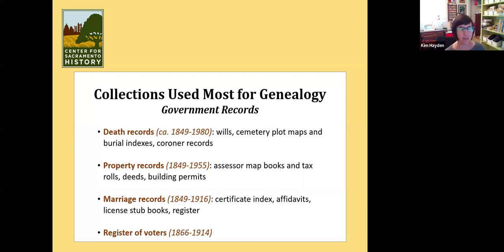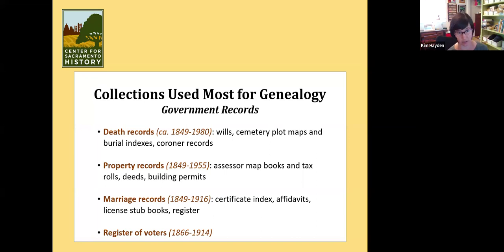The assessor rolls coincide with the map books in that they list people alphabetically and what their personal or real property taxes were and where they owned property. So if you don't know where your ancestor owned property, you look at those and it'll tell you. If you do know, you can look at the map books, which are organized by property — block by block in the city of Sacramento. All of those map books are online on the Internet Archive.